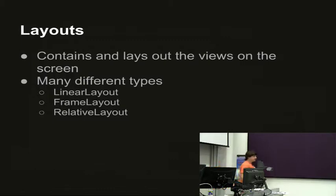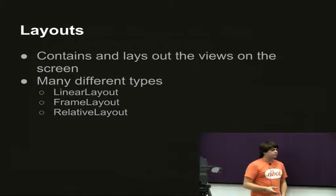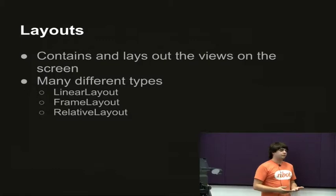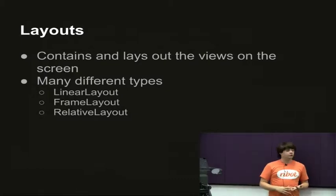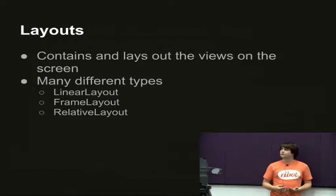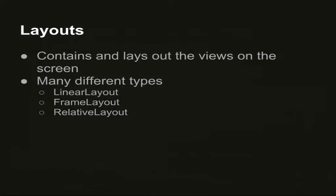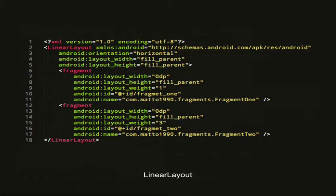Layouts are defined as XML files and basically lay out everything on the screen. You've got layout containers and the actual views themselves. The ones you'll use the most are linear layout, frame layout, and relative layout. This is an example of a linear layout — from the name you can guess what it does. With orientation set to horizontal, it'll put views next to each other horizontally; you can also have it vertically. You have your linear layout and inside I've got two fragments that will be laid out next to each other.